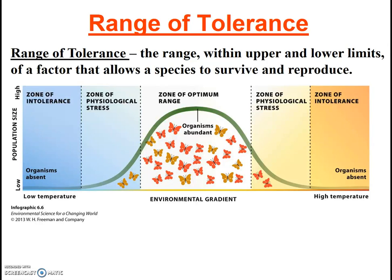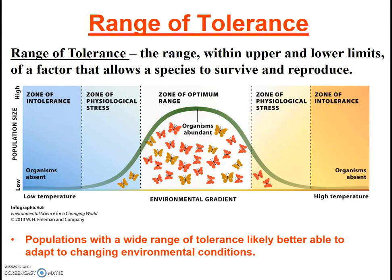Two final points regarding range of tolerance. First, populations with a wide range of tolerance will likely be better able to adapt to changing environmental conditions. And second, range of tolerance for any particular nutrient or condition likely varies during a life cycle. For example, a fish may have different dissolved oxygen requirements when it is an egg versus a small fry versus an adult. Similarly, it may have different needs for temperature or other specific nutrients during each life stage.